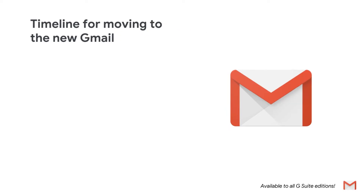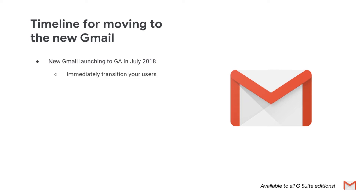We recently introduced an early adopter program for the new Gmail and want to provide some additional details about the rollout schedule. After the new Gmail has the general availability launch in July 2018, you'll have the following options in the admin console: immediately transition your users to the new Gmail, allow your users to opt into the new Gmail at the time of their choice, or have your users wait until they are allowed to opt in.